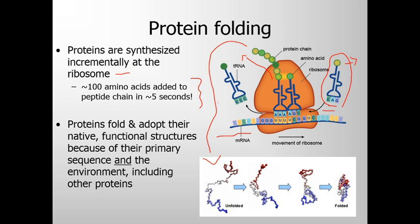Proteins fold and adopt their native functional structures because of their primary sequence and the environment, including other proteins. This unfolded protein needs to fold and become a native folded conformation. Now what we are going to look at is how folding happens.